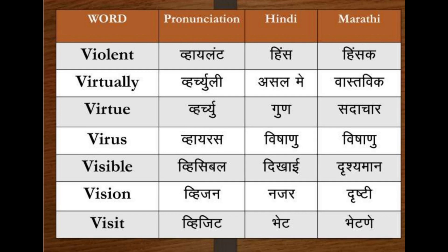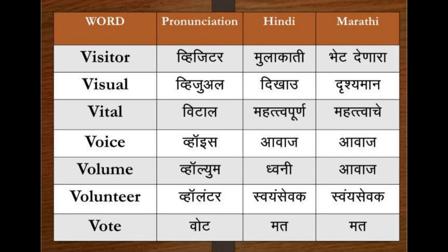Next we have: Violent — Hintsak. Virtually — Asleme, Vastavik. Virtue — Gun, Sadaachar. Virus — Vishanu. Visible — Dikai, Drishman. Vision — Nazar, Drishti. Visit — Bhet, Bhetne. Visitor — Mulaakati, Bhet Denara. Visual — Dikhau, Drishyaman. Vital — Mahatvapurn, Mahattvaache. Voice — Aavaaj, Aavaaj. Volume — Dhvani, Aavaaj. Volunteer — Swayam Sevak, Swayam Sevak.